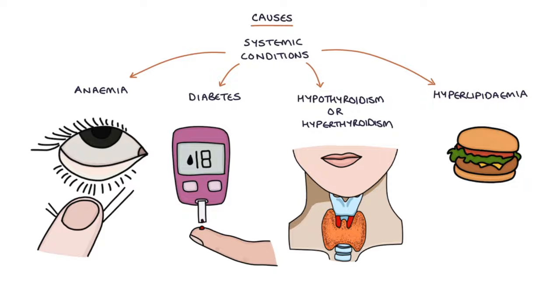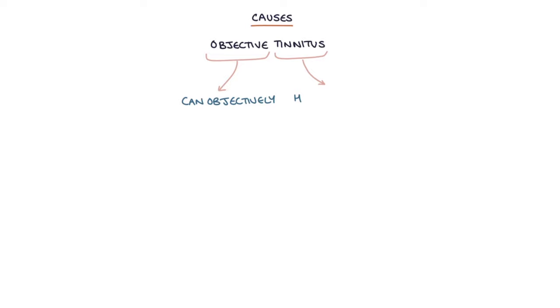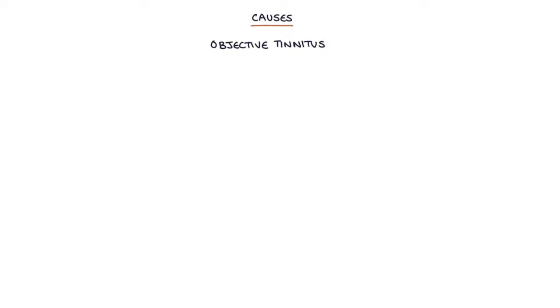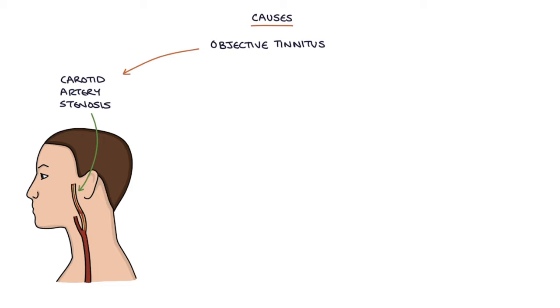Objective tinnitus refers to when a patient can objectively hear an extra sound within their head. This sound can also be observable on examination by auscultating with a stethoscope around their ear. In patients with objective tinnitus, actual additional sounds may be caused by carotid artery stenosis, where there's a pulsatile carotid bruit with turbulent flow past the stenotic area of the carotid artery.